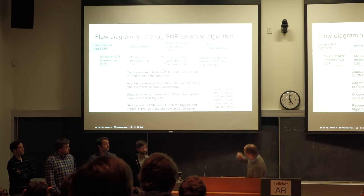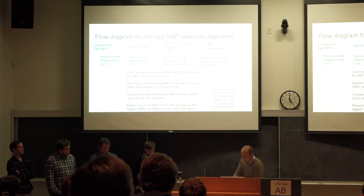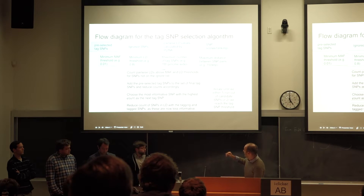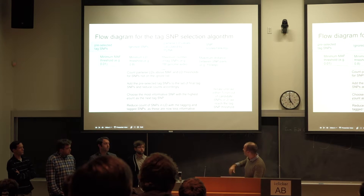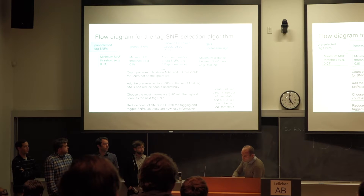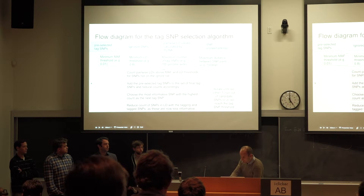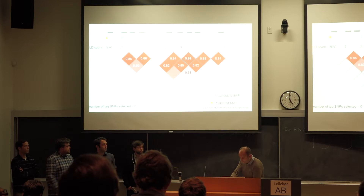We then start the iterations by choosing the SNP which is most informative — the one in high LD with the most other SNPs. Once we choose it, we reduce the counts of the tagging and tagged SNPs. We continue that loop until either we run out of candidate SNPs or we reach whatever threshold we decided on.